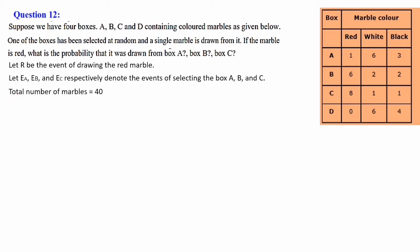Total number of marbles altogether in the boxes is 40. Adding all: 1 plus 6 plus 3 gives 10 for box A, 6 plus 4 is 10, 8 plus 2 is 10, 6 plus 4 is 10. So total 4 rows, giving 40 marbles total. Number of red marbles: 6 plus 1 is 7, plus 8 is 15. So number of red marbles is 15. Probability of R is 15 divided by 40, which simplifies to 3 by 8.